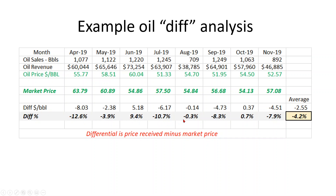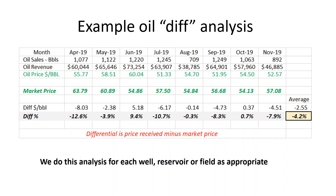Over the months the differential can change, and you have to analyze it to see if things are leveling out at one number. As a first pass, I would just take the average, which is a negative 4.2 percent oil differential for this well. You have to do this analysis for each well, reservoir, or field as appropriate. If all the wells are in the same reservoir, you don't need separate calculations, but if you have different reservoirs or fields, you must perform this analysis on each one to get the correct price for that oil.